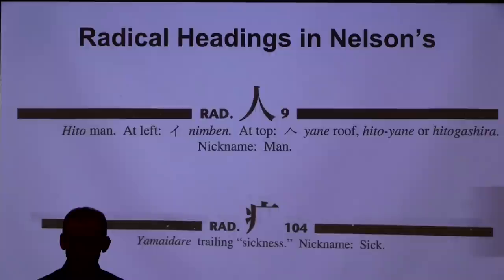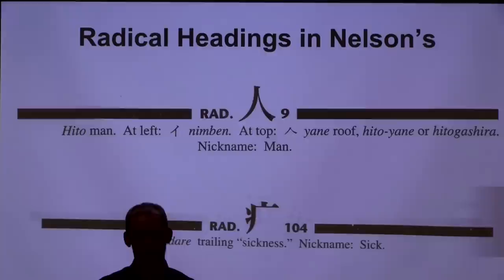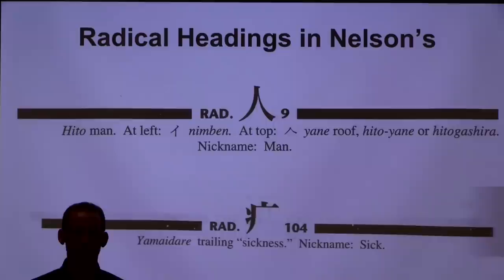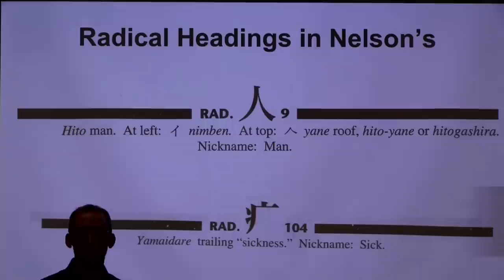Are these 214 radicals the only radicals there are? The answer is sort of yes. In the Kangxi radical system, those are the 214 radicals and then it ends — but that was only invented in the 1700s. The fact that those are the only ones is a malleable feature — it's just a product produced at that time and has been the standard ever since. So the answer is yes, kind of no, but mostly yes. These systems are good enough; they're not going to get you through every situation.